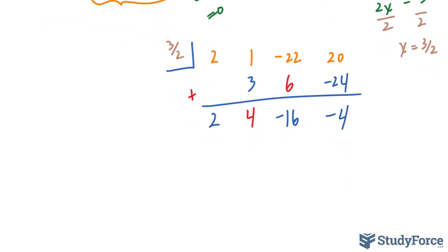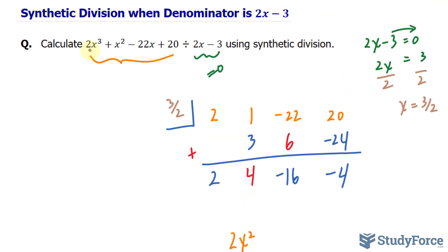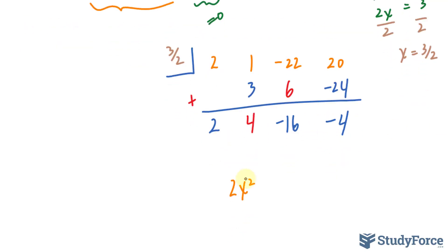So the way we write down our answer is by saying 2x to the power of 2. Notice that we started off with a cubic, so our final answer should be a quadratic. 2x to the power of 2, notice that this 2 and that 2 correlate, plus 4x minus 16, that's your brand new constant, and this value is considered the remainder.